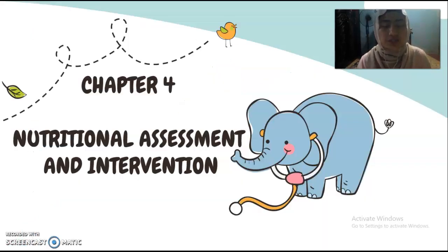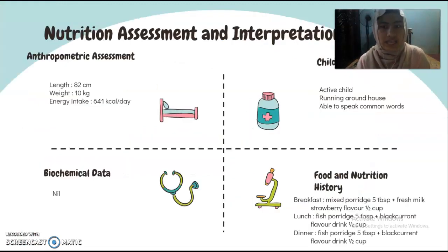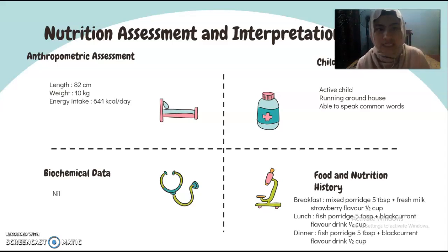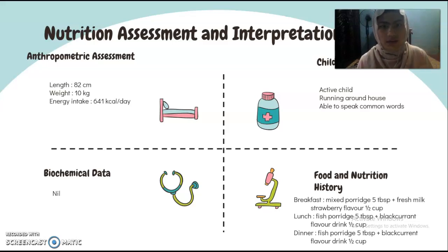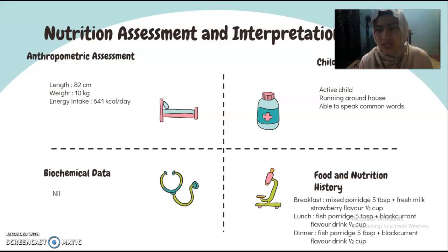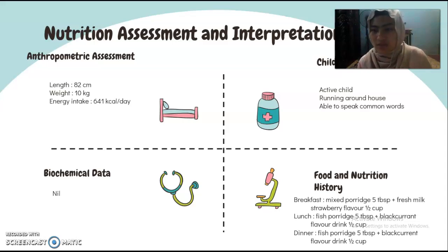For the nutritional assessment and intervention, using the ABCD framework — the anthropometric assessment has been mentioned earlier. When I calculate the energy intake for this patient, she consumed less than the recommended amount, which is 641 kcal per day. There is no biochemical data mentioned. The child development shows this patient is an active child, running around the house and able to speak common words. For the food and nutrition history, during breakfast she consumed mixed porridge with fresh milk; lunch was porridge with blackcurrant flavored drink; and dinner was also porridge with blackcurrant flavored milk.